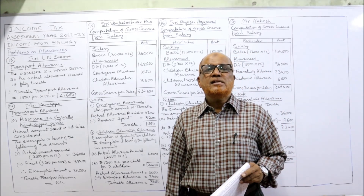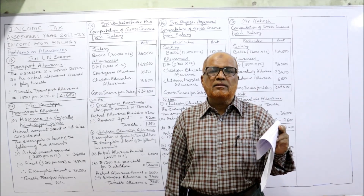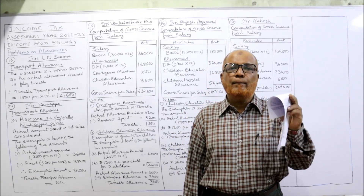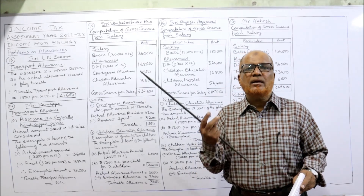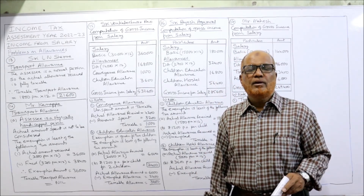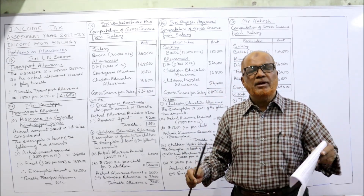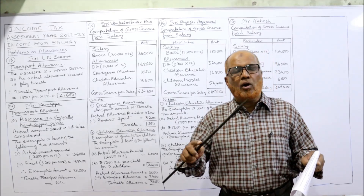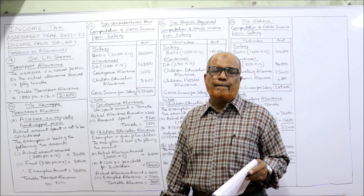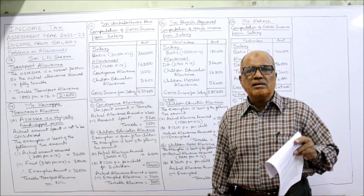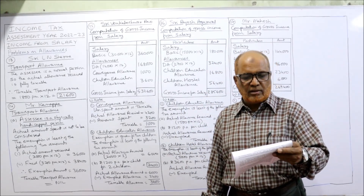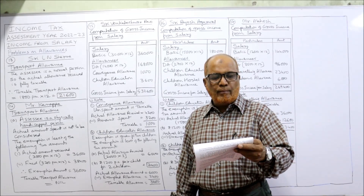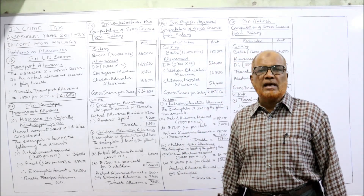The Income Tax Act provides a ceiling of 100 rupees per month or 1,200 rupees per annum per child for a maximum of 2 children. Exemption is given only for 2 children regardless of how many children the allowance is given for. The task is to calculate the exemption to be allowed for allowances and compute the gross income from salary.